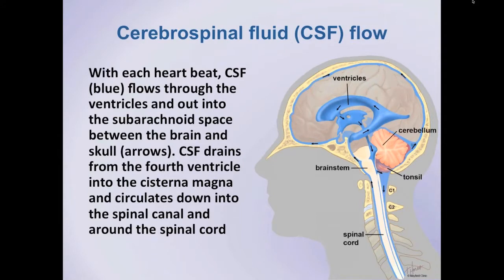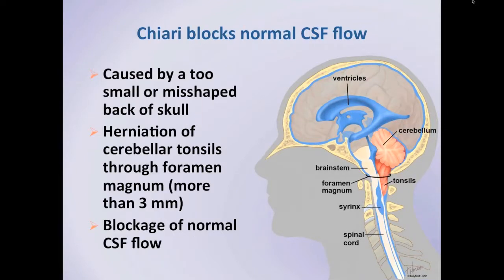Your brain and spinal cord float inside the bony skull and spinal canal, bathed in a fluid known as cerebrospinal fluid, often abbreviated as CSF. This fluid is created inside the ventricles and then circulates up and down between the skull and spine. With each heartbeat, CSF flows from the ventricles out into the subarachnoid space, drains from the fourth ventricle into the cisterna magna, and circulates down into the spinal canal and around the spinal cord. Chiari malformation blocks this normal flow of CSF.